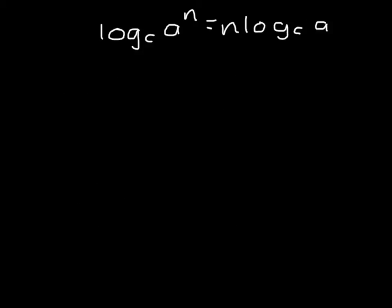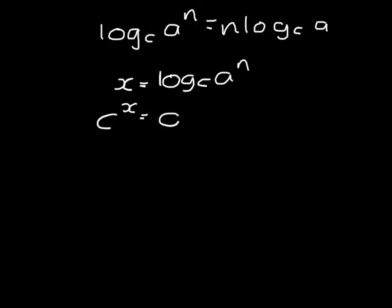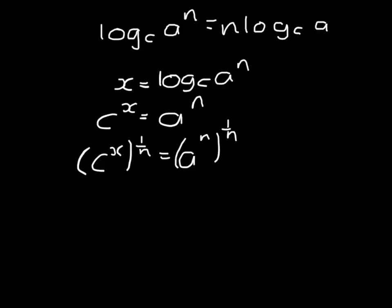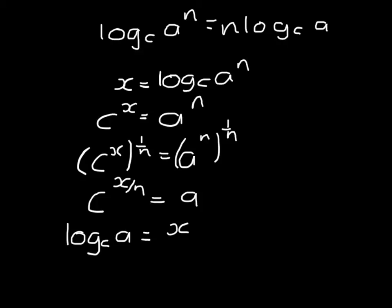Starting on the left hand side, I'm going to let x equal log to base c of a to the power n, which means that c to the power x is a to the power n. Then I'm going to take the nth root of both sides, so c to the power x to the power 1 over n equals a to the power n to the power 1 over n. That gives c to the power x over n equals a. We rewrite that as a log: the log to base c of a equals x over n.